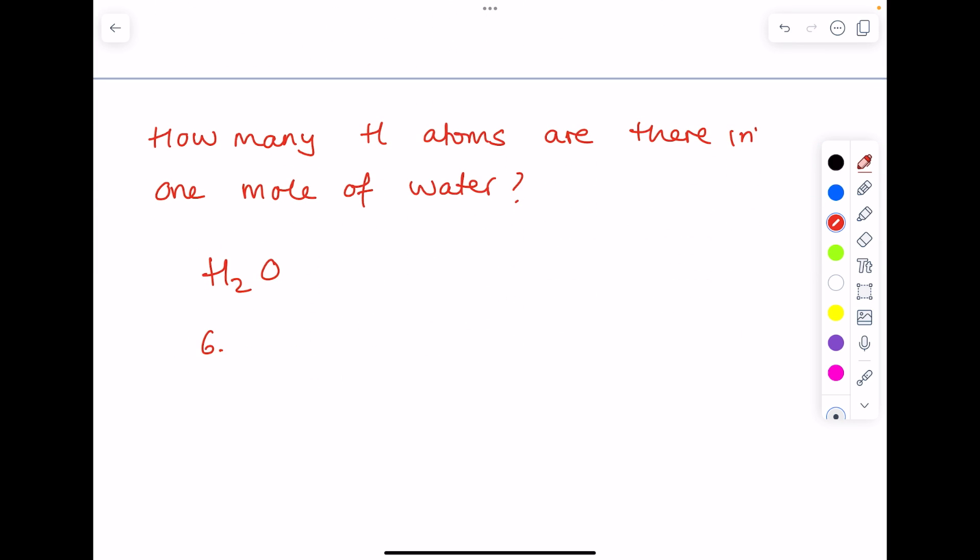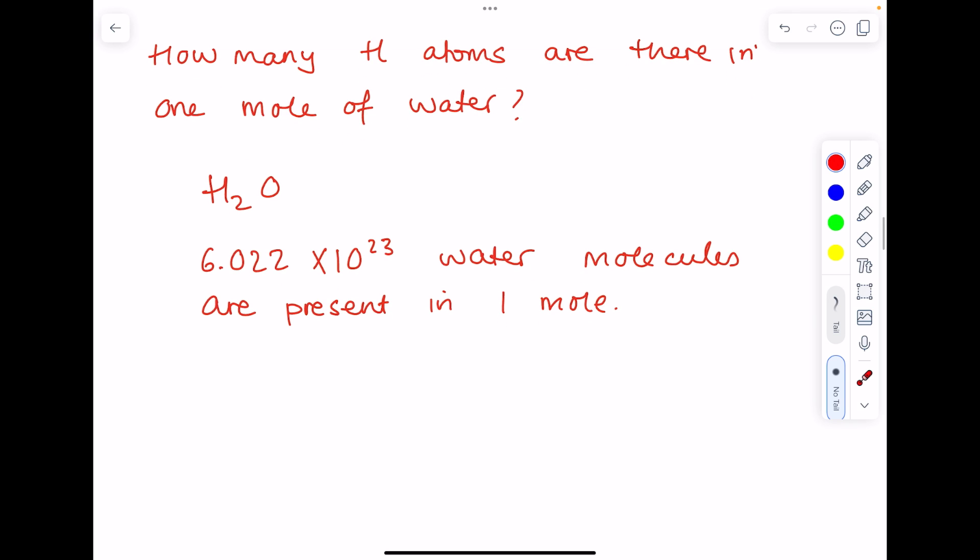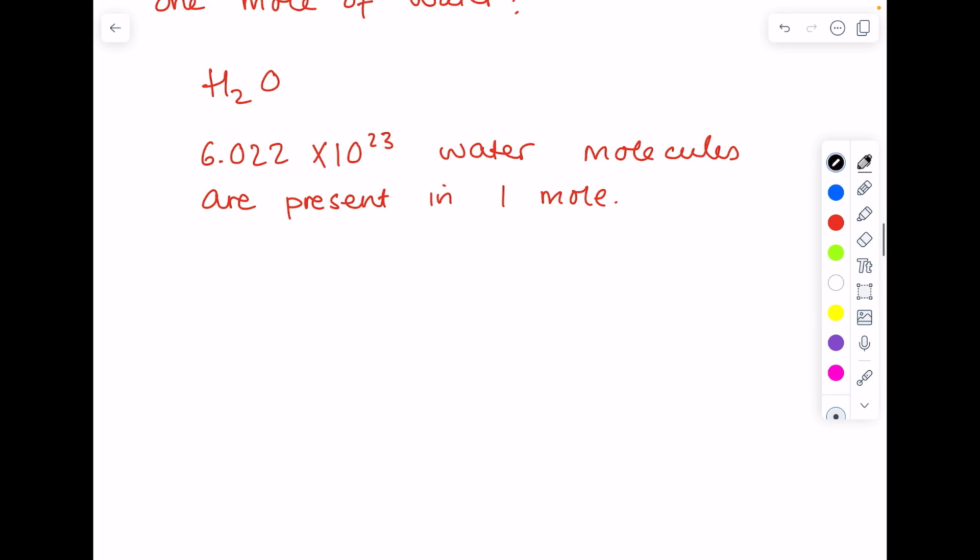So to answer that, consider the formula of water—it's H2O. So we know that in one mole we have 6.022 times 10 to the 23 water molecules, but if you look at the formula you have 2 lots of hydrogen atoms per one water molecule, so we simply need to multiply that answer by 2. So in fact we have 1.20 times 10 to the 24 hydrogen atoms in one mole of water.